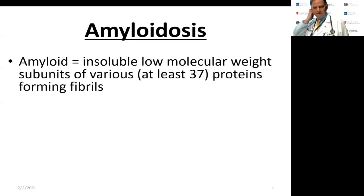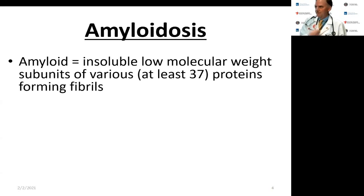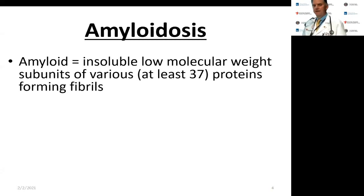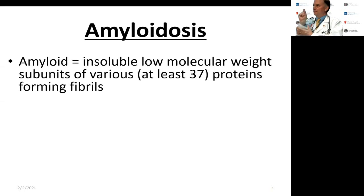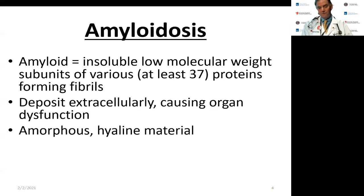Amyloidosis — the word amyloid is actually a misnomer. It comes from the word for cellulose because when this substance was first identified on biopsy specimens in the 1700s, they thought it came from plant material. Actually, it involves insoluble material comprised mostly of low molecular weight proteins of various sizes — up to 37 different proteins have been identified — and they form unique fibrils that are insoluble and accumulate in extracellular spaces, causing organ dysfunction.